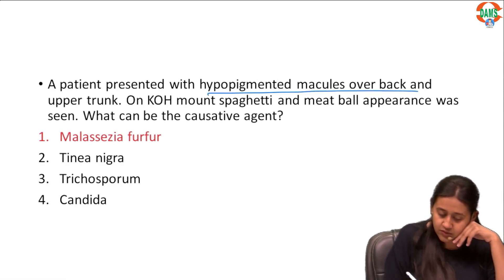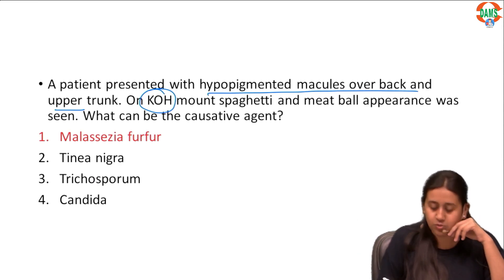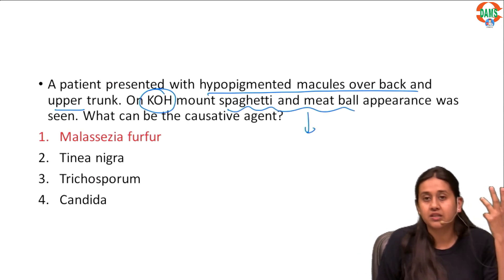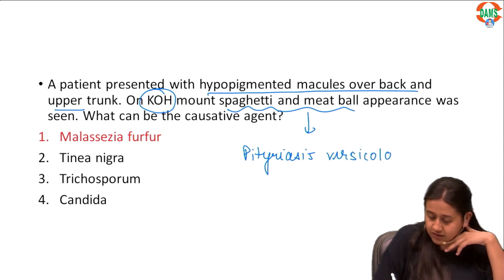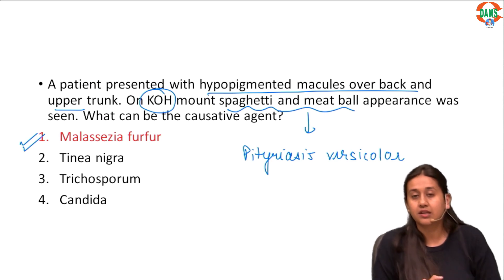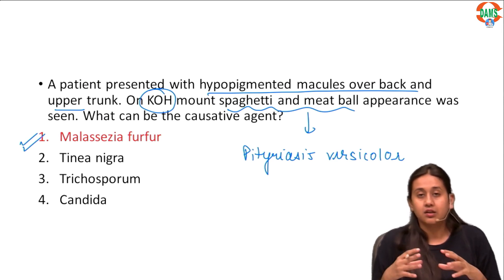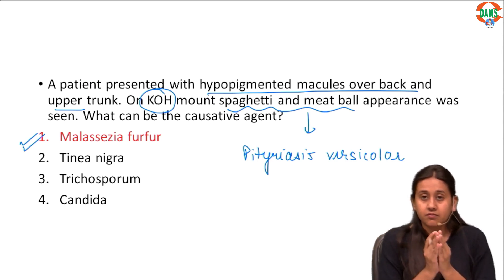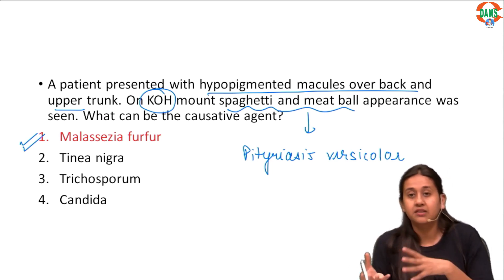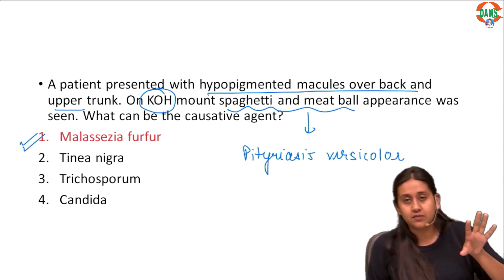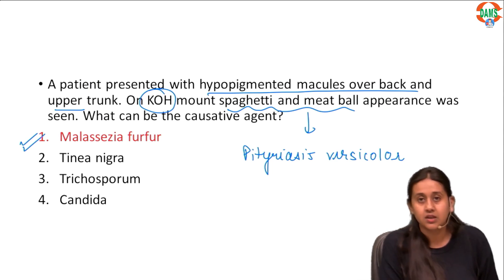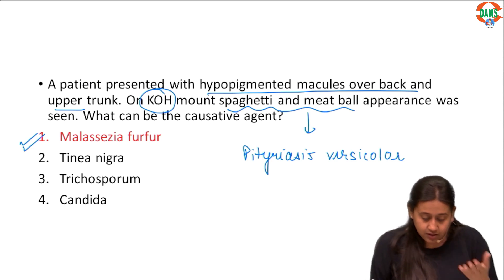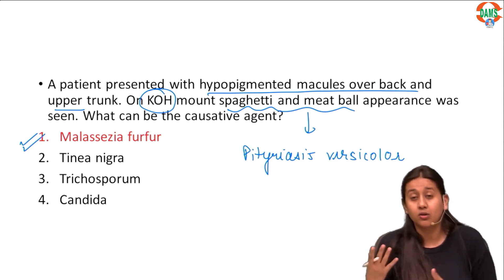The next question: hypopigmented macules over the back and trunk; KOH examination shows spaghetti and meatball appearance — in which condition do you see this? This is a very classical feature of pityriasis versicolor. Pityriasis versicolor is a superficial fungal infection caused by Malassezia species. Because this is a yeast that remains in both spore and hyphal form, when you do a KOH mount you see both spores and hyphae, giving the appearance known as spaghetti and meatball.